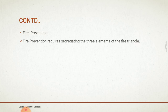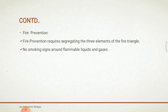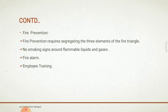Fire prevention requires segregating the three elements of the fire triangle. These three elements together form the fire, so in order to prevent it, these three elements are to be kept apart. In practice, a method of achieving this goal is to post and enforce no-smoking signs around flammable liquids and gases, and to have fire watches on all work involving a torch applied to materials for a minimum of two hours after the last torch is turned off.